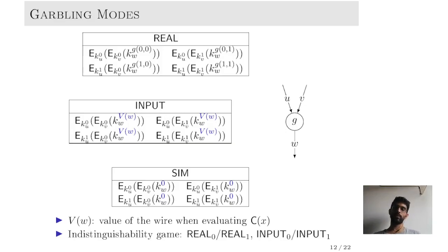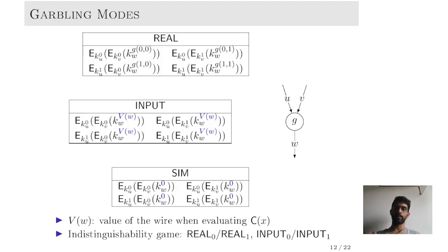In the distinguishability game, the real mode consists of two real modes — real zero and real one — where real zero consists of the gate in circuit C0 and real one consists of the gate in circuit C1. For the input dependent modes there are also two modes, input zero and input one. For example, input one consists of the garbling table which is the constant gate but where the value is determined by circuit C1 run on input X1.